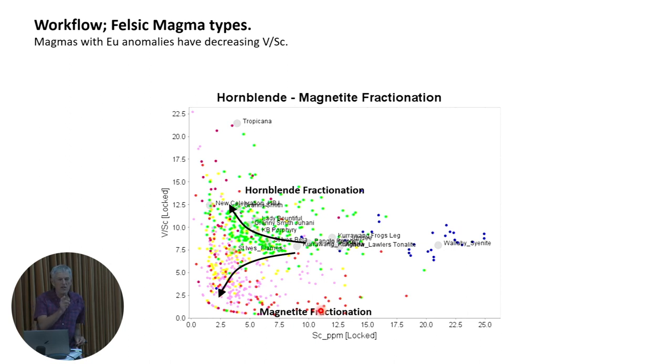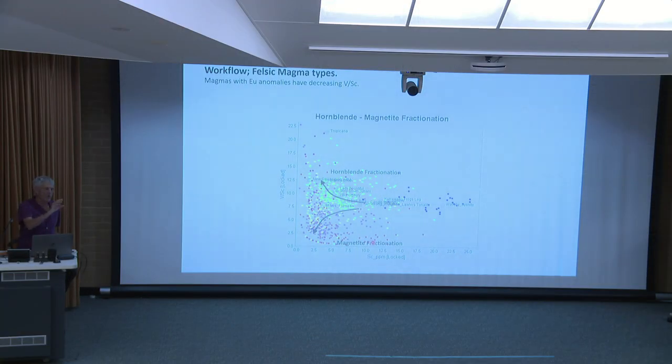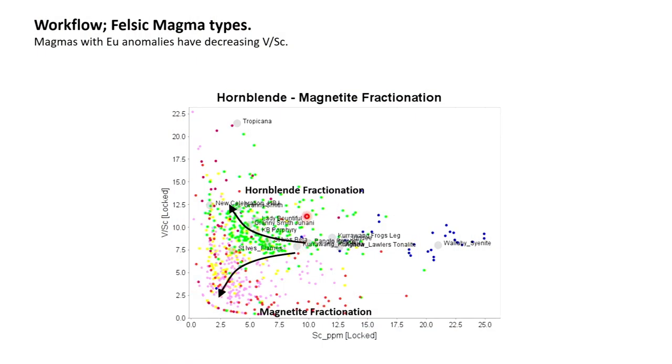I've gone through the granite database and a bunch of public domain papers, and I've picked out intrusions from different gold camps that I think are spatially and genetically related to gold deposits. For the publicly available data I've picked out the median composition of those intrusions, and in IO Gas you can set up a rock compositions table — I can give that to everybody. You can load it into your version of IO Gas, make a scatter plot, and compare your data to, say, the Granny Smith granodiorite — click and it'll appear as a dot on your screen. That's a really useful reference.